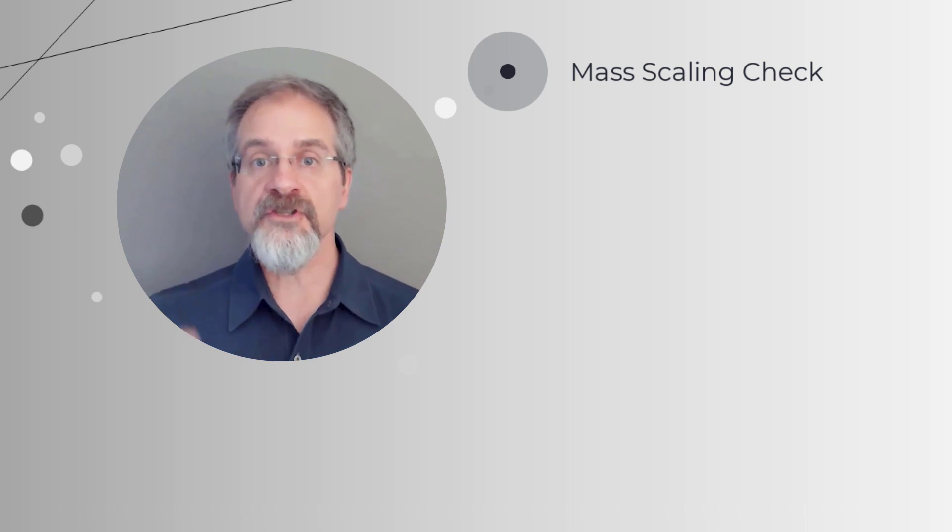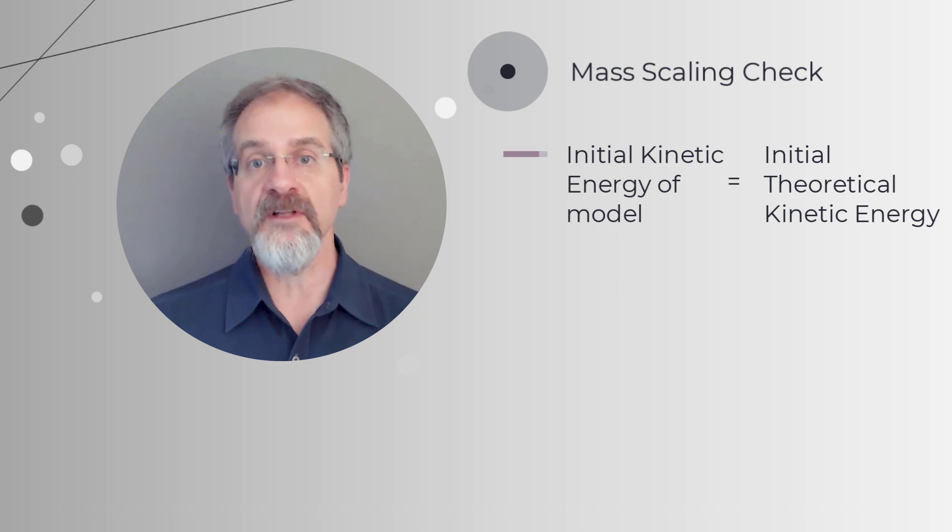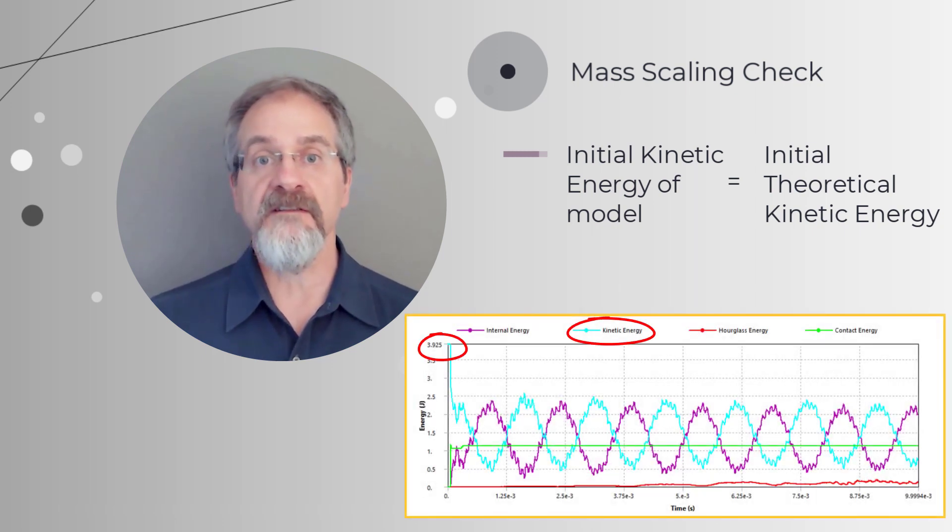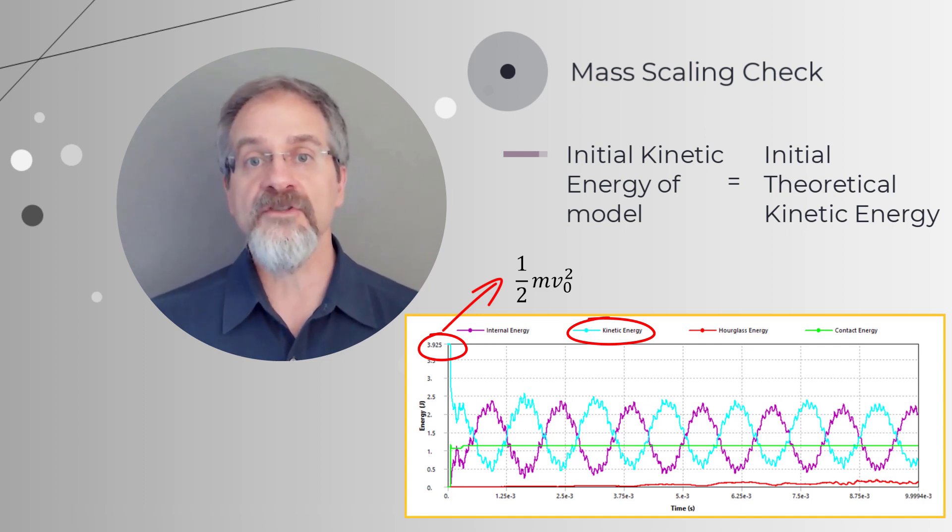So the first check would be to look at the energy summary and ensure that the initial kinetic energy in the simulation is what is expected theoretically. If too much artificial mass has been added to the system, the initial kinetic energy in the simulation will be significantly higher than the expected value.